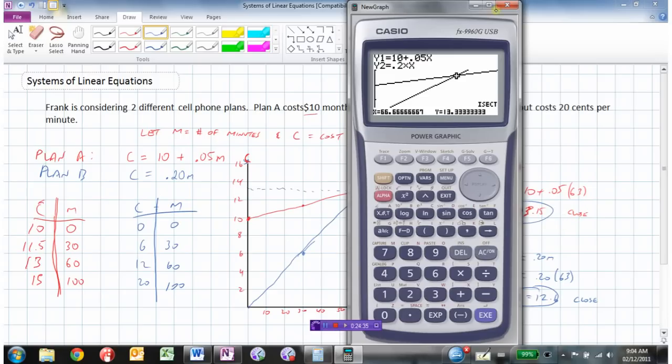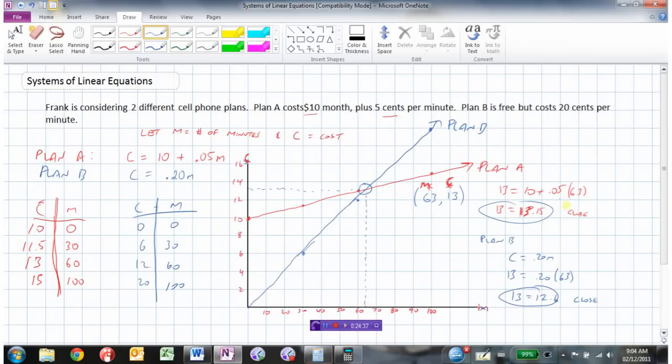66.6, 13.333. So if we put these values into this equation and into this equation, they would exactly equal each other. But we were pretty close even with a real small little graph there. And that information would certainly be good enough for Frank to make his decision.